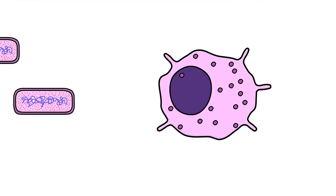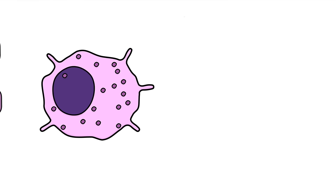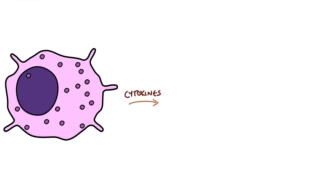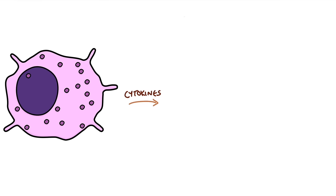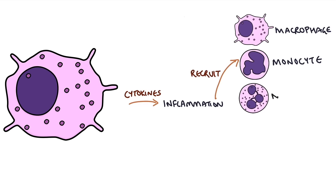If the attacking army is too great, the macrophages need help, so they release cytokines — signaling proteins, sort of like local hormones, that sound the alarm of an infection in the local area. This leads to a process called inflammation. One of the most important actions of these cytokines is to recruit and activate more cells of the immune system such as macrophages, monocytes, and neutrophils.